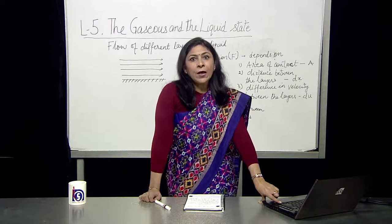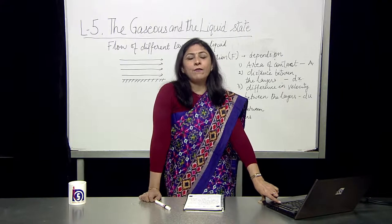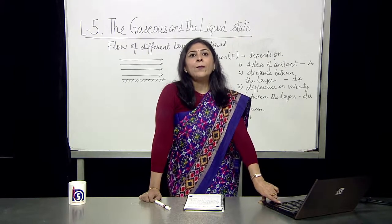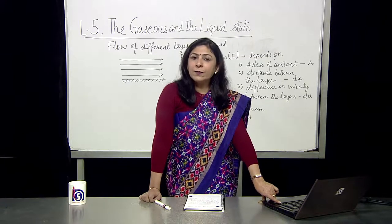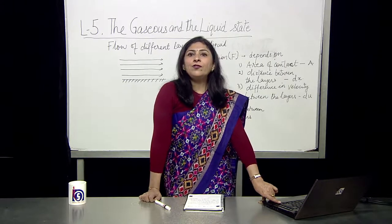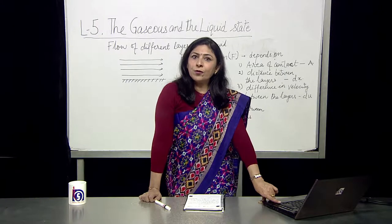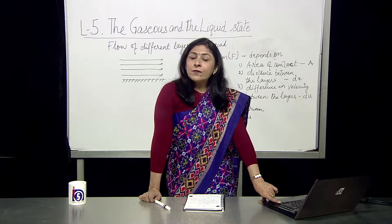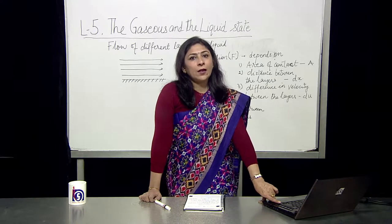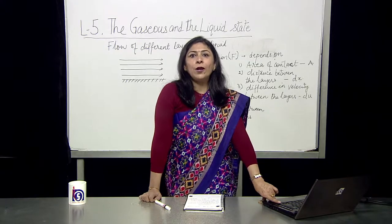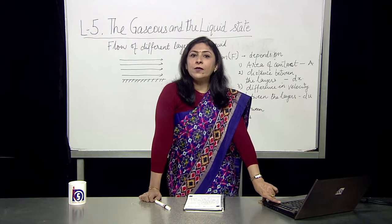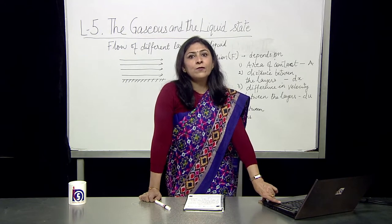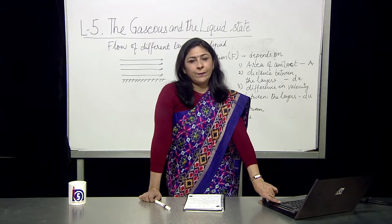Let us sum up what we have studied. Boiling point is the temperature at which the vapor pressure of the liquid becomes equal to the external pressure. Surface tension is the force acting on an imaginary line of unit length drawn on the surface of the liquid, acting perpendicular to it towards the liquid. Due to surface tension, liquids tend to have minimum surface area and show phenomena of capillary rise or fall and curved meniscus. Viscosity is the internal force of friction opposing the flow of liquid. Thank you.